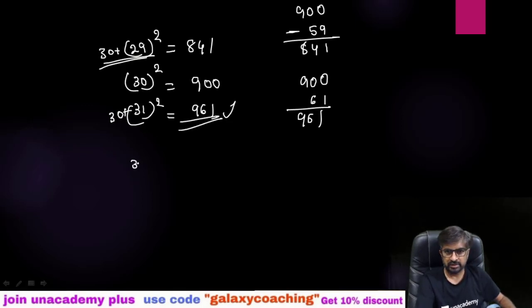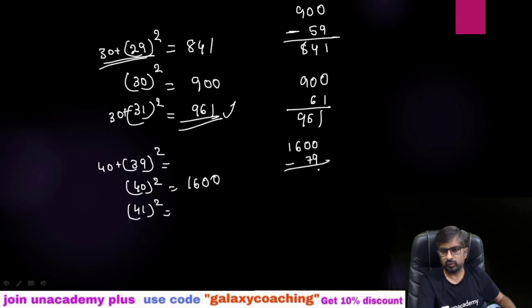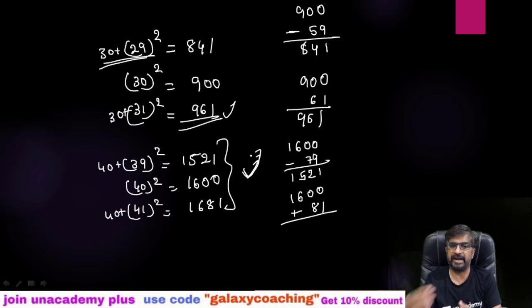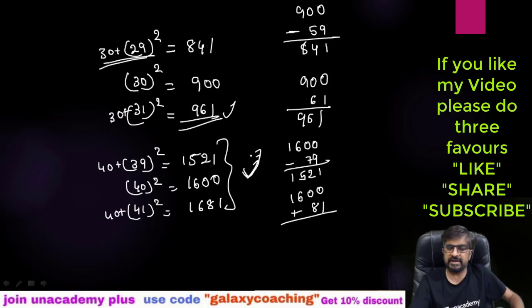Let me give you one more example. 39 square, 40 square, and 41. So 40 square is 1600. For here, 40 plus 39 you need to subtract from 1600. 1600 minus 79, so 1521. Here, 40 plus 41 you need to add with 1600. 1600 plus 81, 1681 will be your answer. You can see in all terms you will get some pattern. If you follow that pattern, easily you can find out squares of many terms.